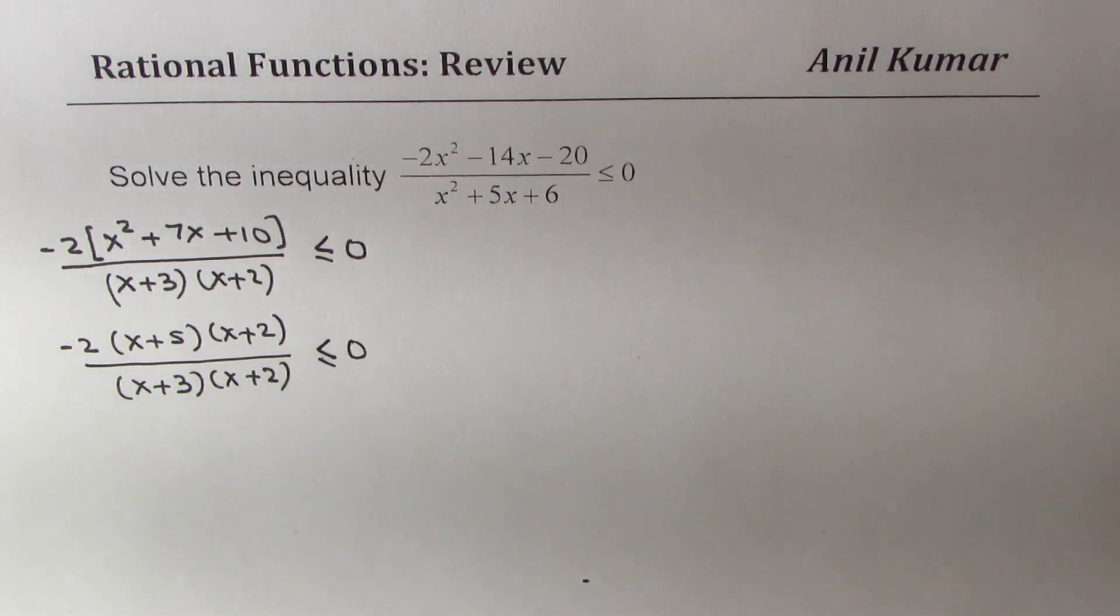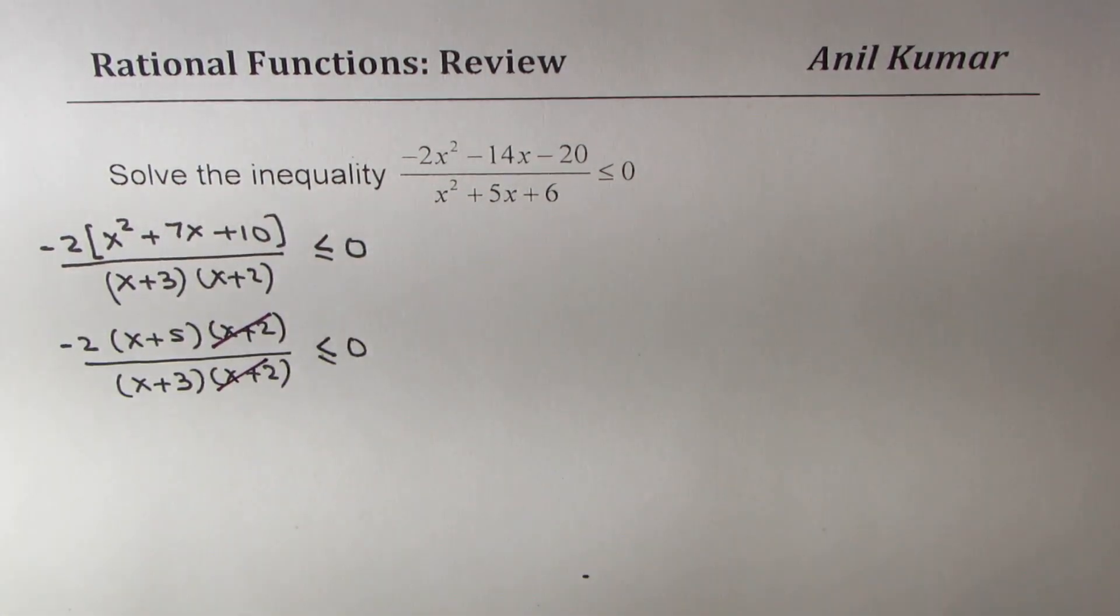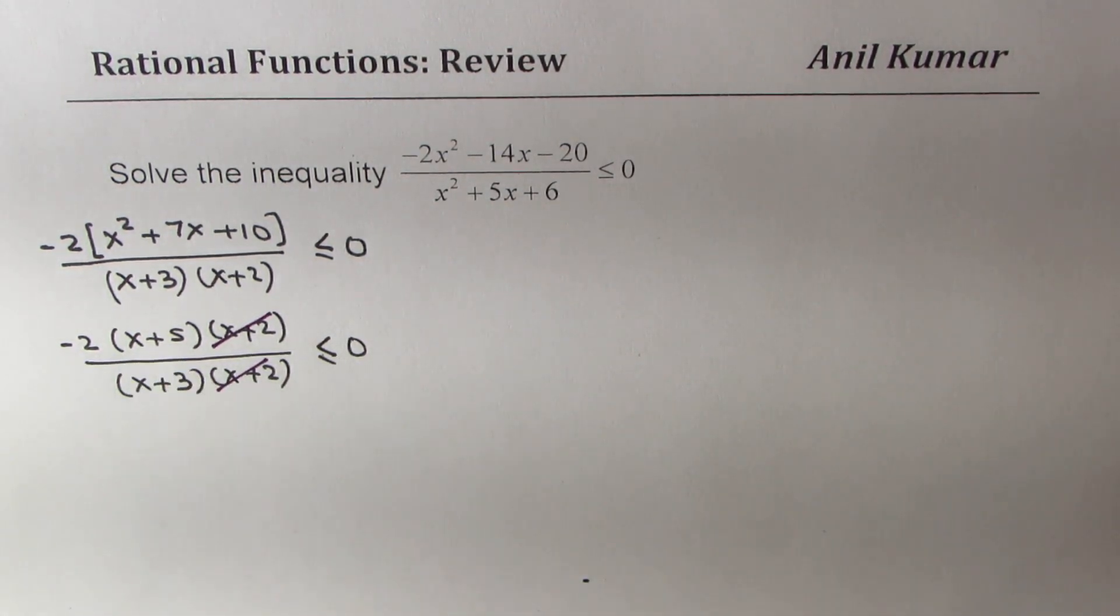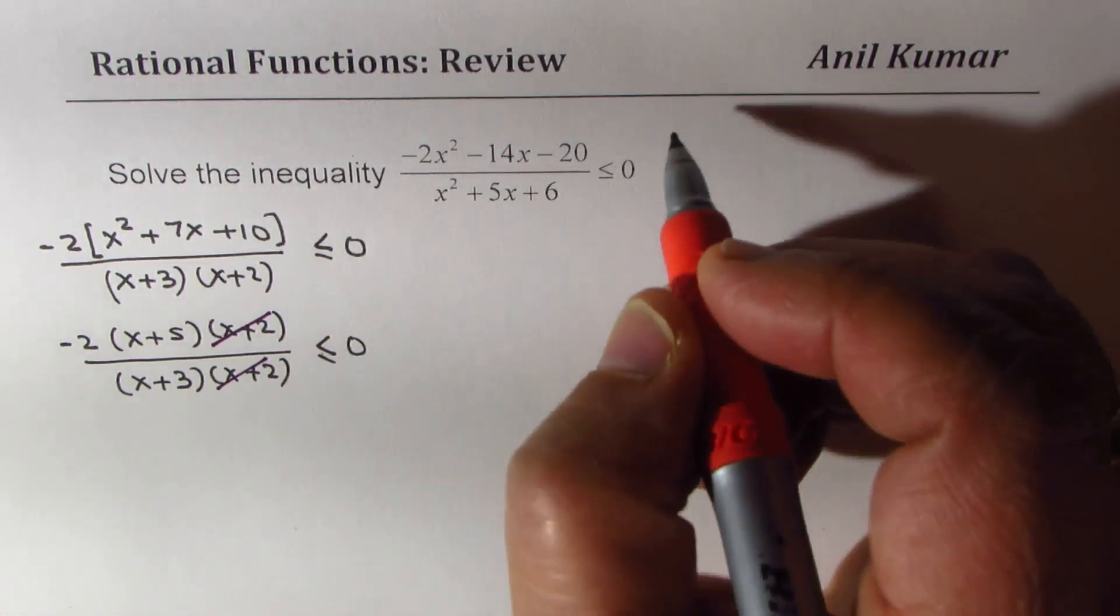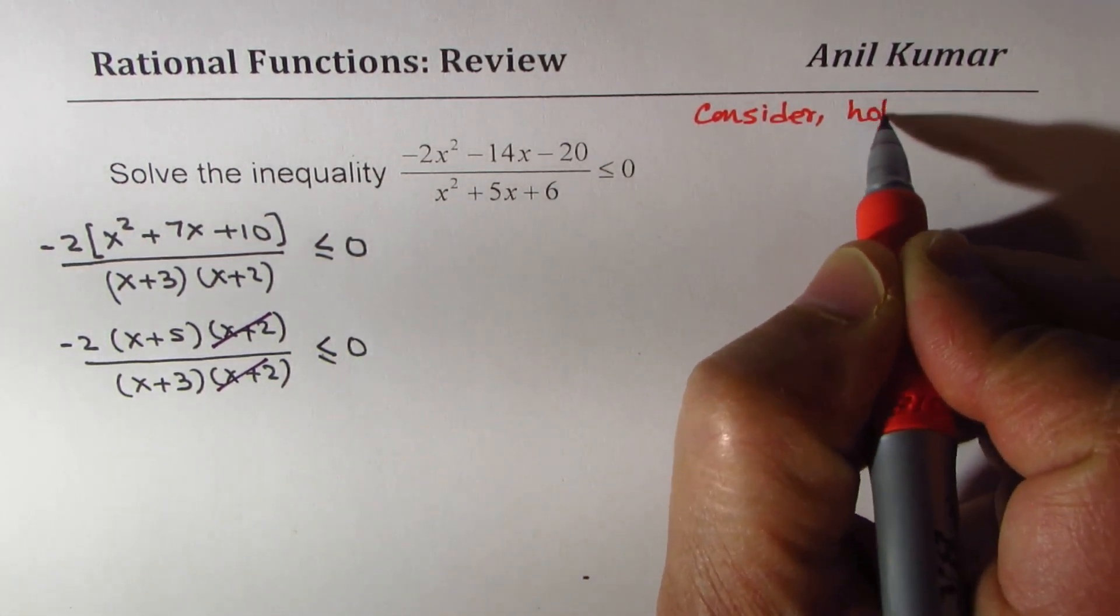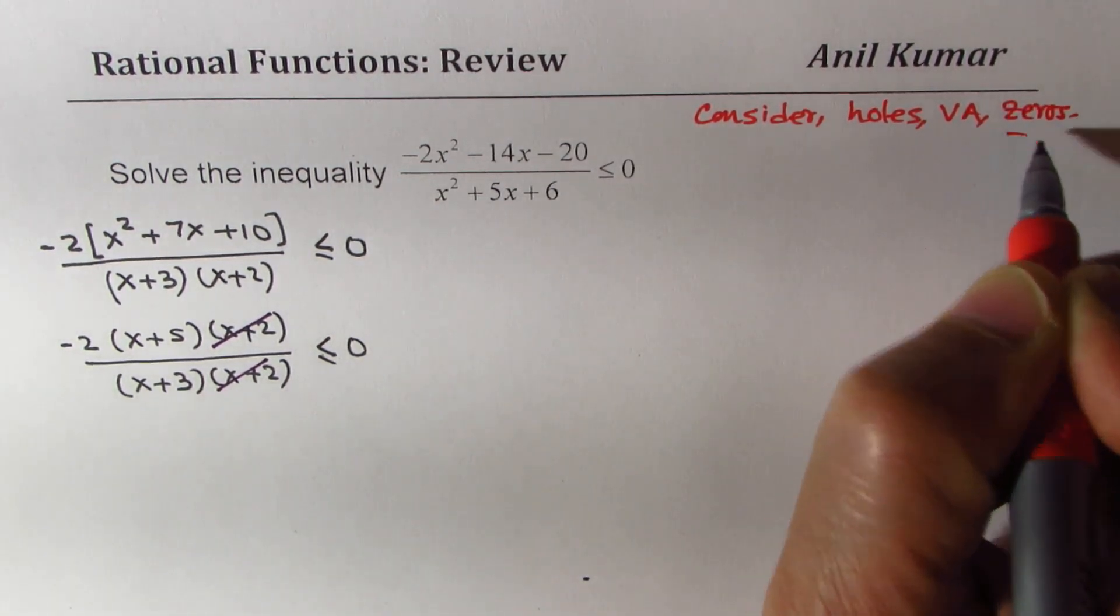So that means we have a hole at x equals to minus 2 that cancels and we have a vertical asymptote at minus 3, a zero at x equals to minus 5. Now the important question to think about is when we look for inequalities should we consider the hole or not? So we need to consider, right? So what we should do is we should consider holes, vertical asymptotes and zeros.